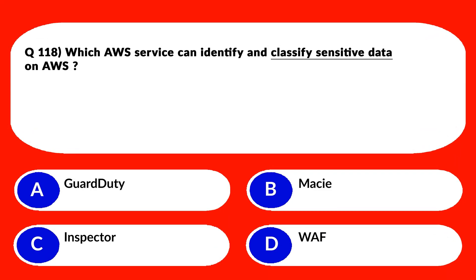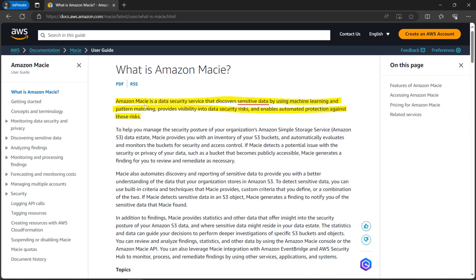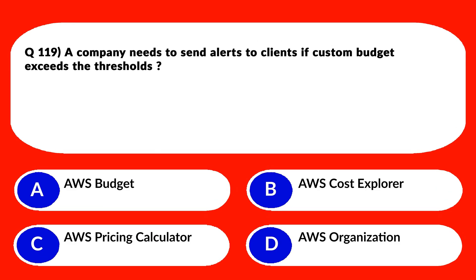This question should be a piece of cake because, as per the keyword, whenever you see keywords like sensitive data or personally identifiable information (also known as PII) in the question, think about Amazon Macie and you should get your answer. Keep option B and reject the rest. The official documentation states Amazon Macie is a data security service that discovers sensitive data using machine learning and pattern matching, provides visibility into data security risks, and enables automated protection against those risks. So just remember: sensitive data → Macie. We'll lock option B as the correct answer.